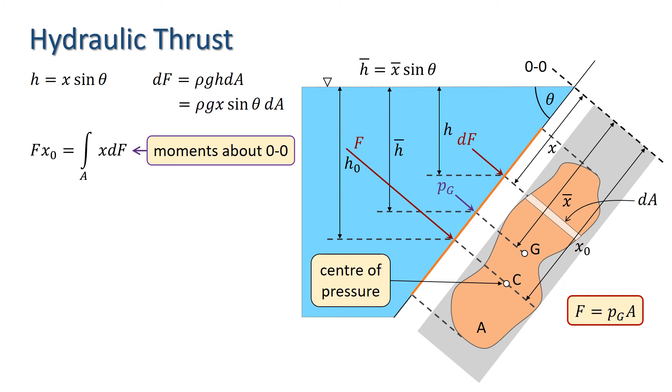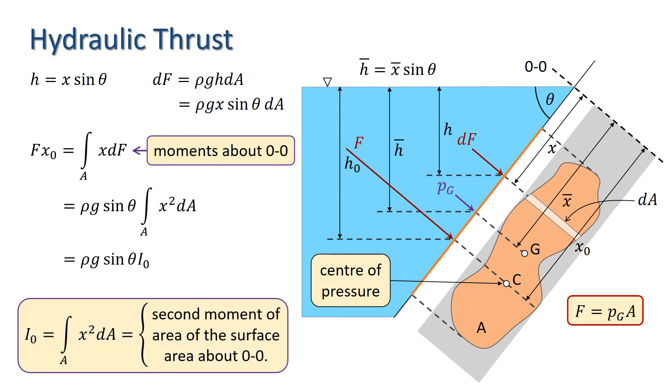Substituting our expression for dF into the integral, we get F X0 equals rho G sin theta I0, where I0 is the second moment of area of A about OO, defined as X squared dA integrated over A.